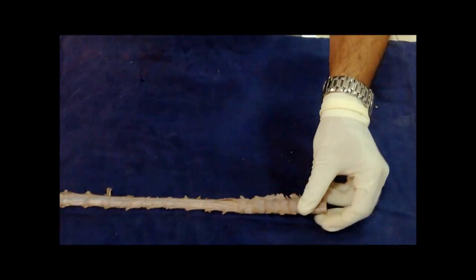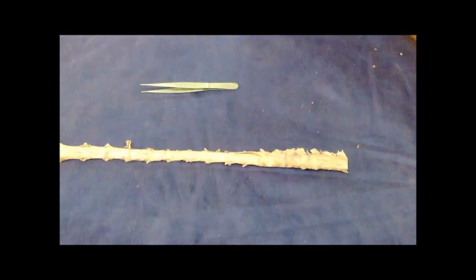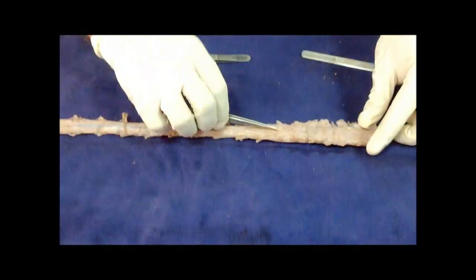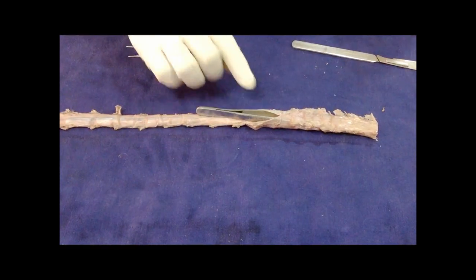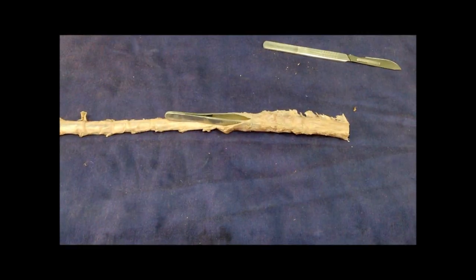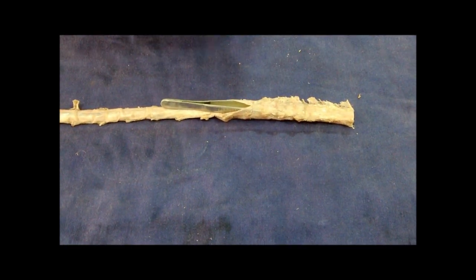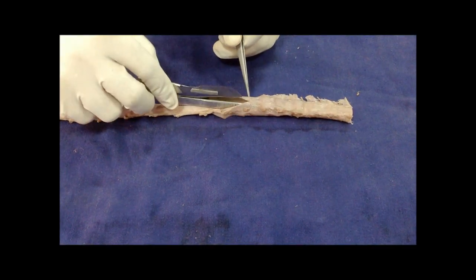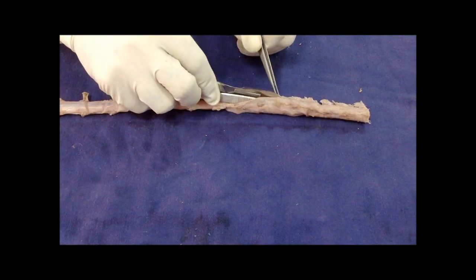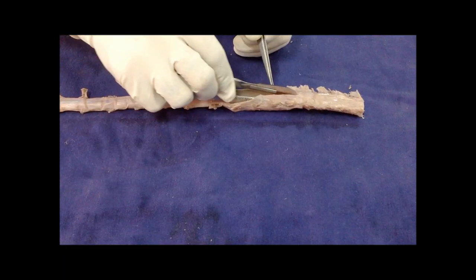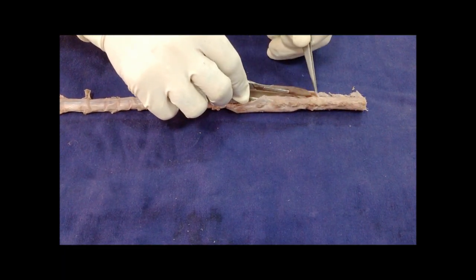I will cut the dura mater. Actually I have passed the forceps in the subarachnoid space because dura and arachnoid mater are close to each other and the space between them is too small. I am cutting the dura and arachnoid together.